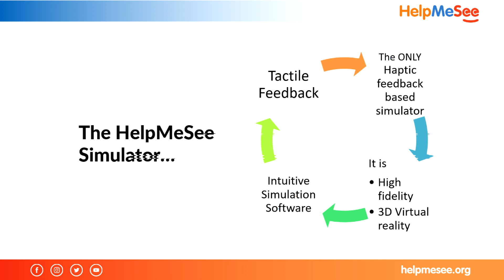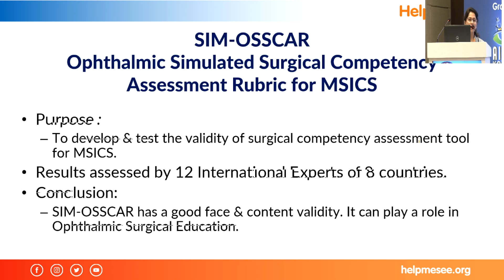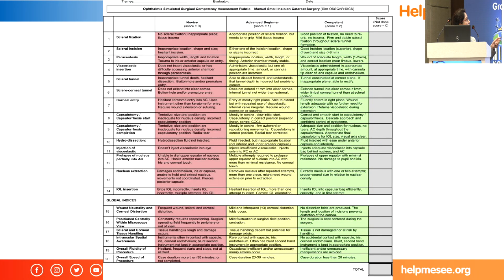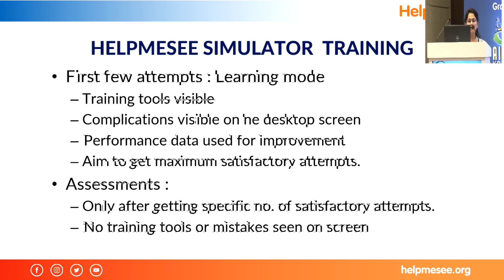The HelpMeSee simulator is the only simulator with haptic feedback, and it has introduced simulation software. Our simulator assesses the performance of a trainee using CMOSCAR criteria, which is assessed by 12 international experts from eight countries. In the learning mode, training tools are visible on the desktop screen of the student. Complications are also visible on the desktop screen, and performance data can be seen when you click on the desktop to see how you are performing in each step. We aim to get maximum satisfactory attempts from every trainee.